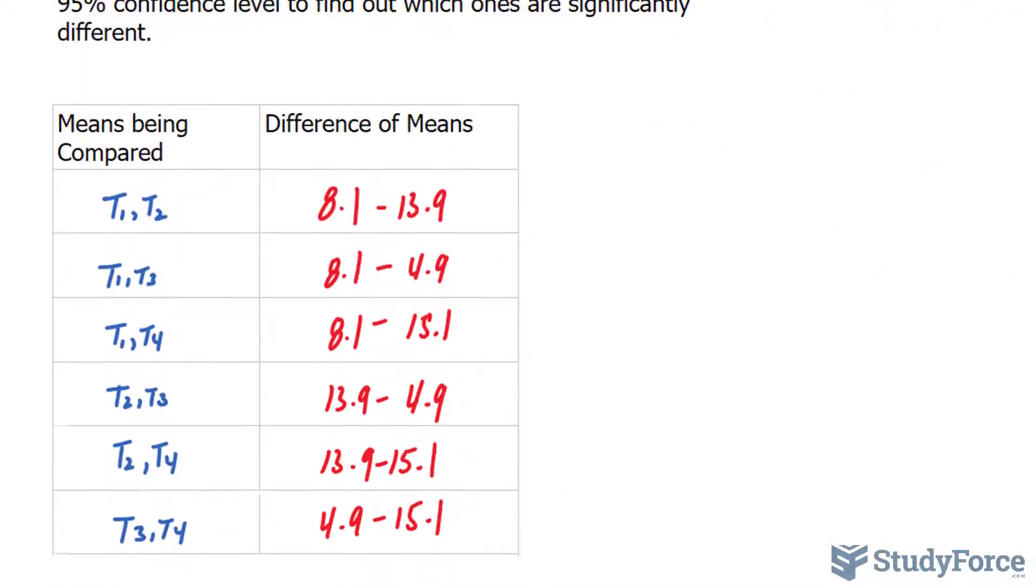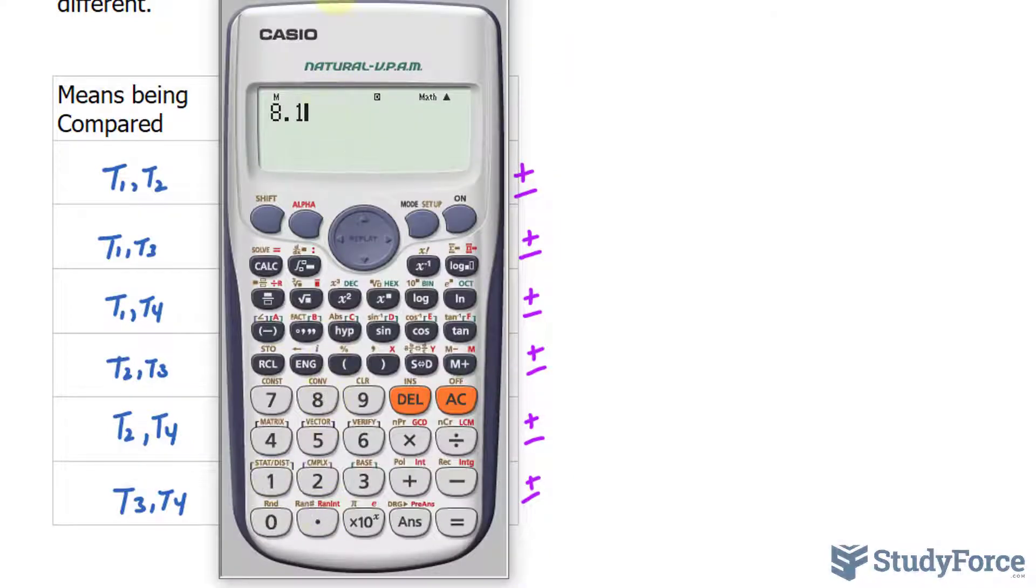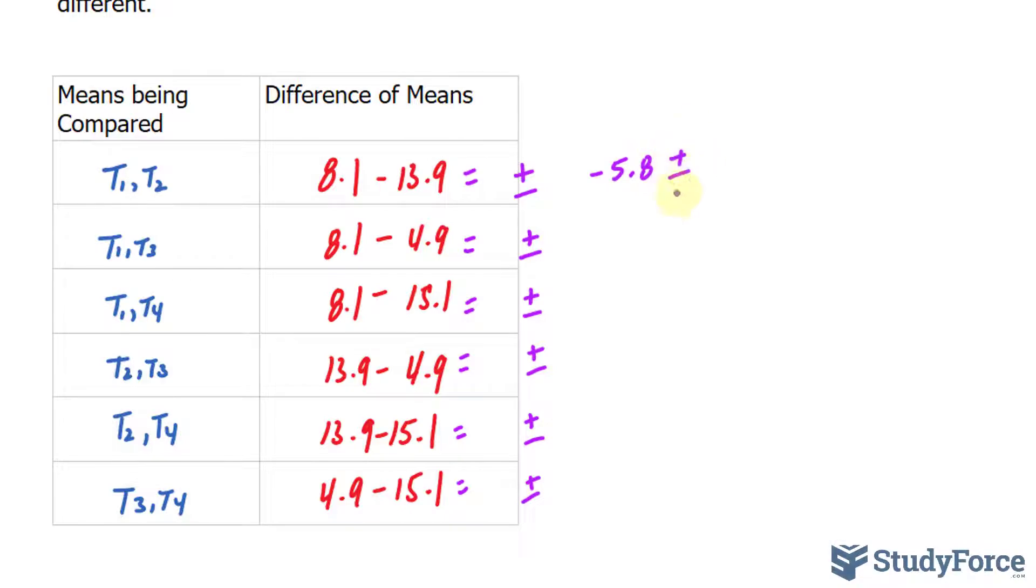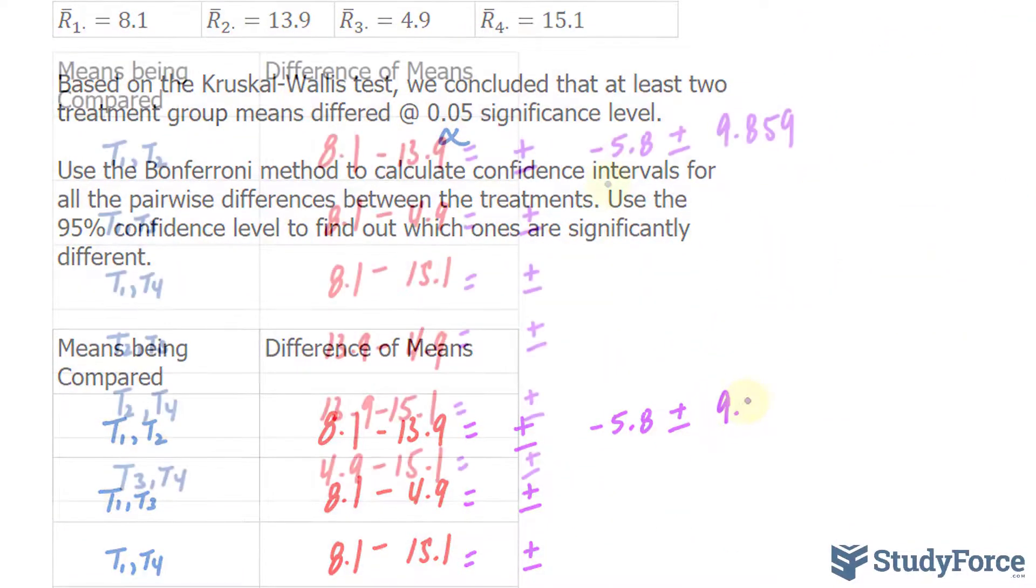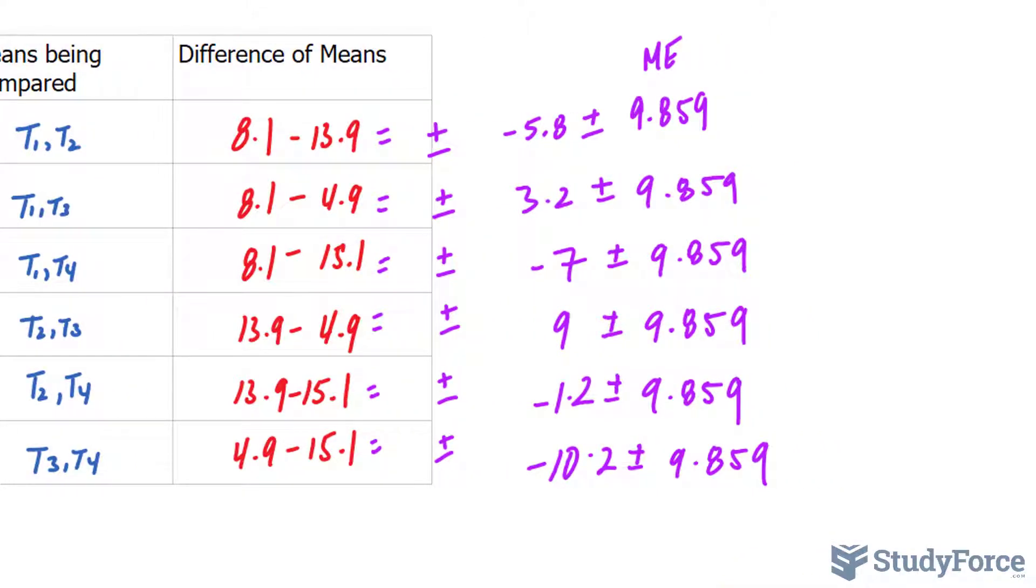We're going to take the differences, whatever these values equal to, and plus minus them with the margin of error to get our confidence interval. Let's go ahead and find these differences for simplicity's sake. We'll take 8.1 minus 13.9, and that is equal to negative 5.8 plus minus the ME value of 9.859. We'll do the exact same thing for the others. As you see, I've combined the differences for each of the treatments, and I'm going to now add and subtract the margin of error for each of these. And I will get a confidence interval with a lower and upper bound, and I'll write that down in this next column.